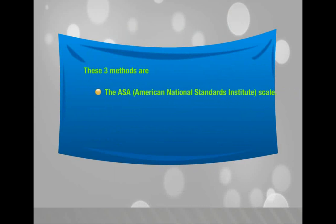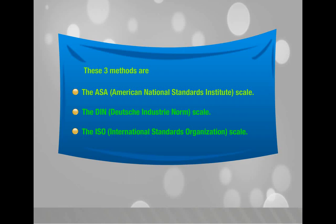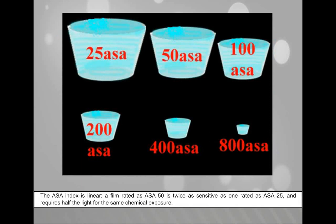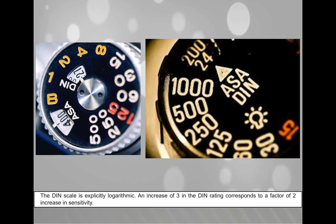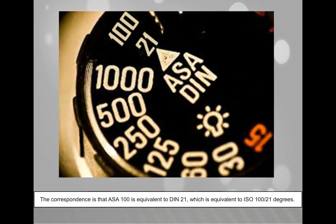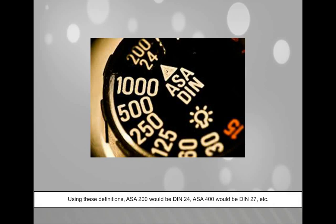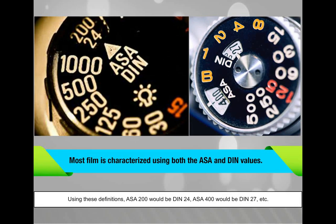These three methods are the ASA (American National Standards Institute) scale, the DIN (Dutch Industry Norms) scale, and the ISO (International Standards Organization) scale. The ASA index is linear: a film rated ASA 50 is twice as sensitive as one rated ASA 25 and requires half the light for the same chemical exposure. The DIN scale is explicitly logarithmic — an increase of three in the DIN rating corresponds to a factor of two increase in sensitivity. The correspondence is that ASA 100 is equivalent to DIN 21, which is equivalent to ISO 100/21°. Thus ASA 200 would be DIN 24, ASA 400 would be DIN 27, etc. Most film is characterized using both the ASA and DIN values.